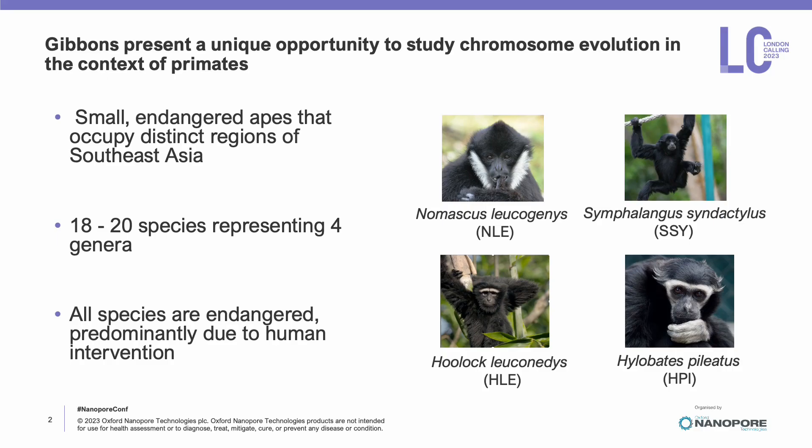Gibbons are a group of small, endangered apes that live natively in regions across Southeast Asia. There's currently between 18 to 20 extant species of gibbon that make up four genera, and here I've placed one representative species from each of the four genera.